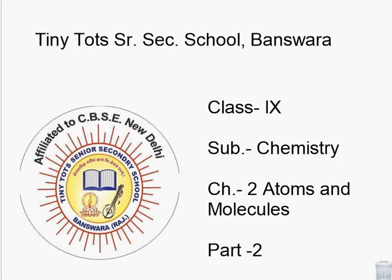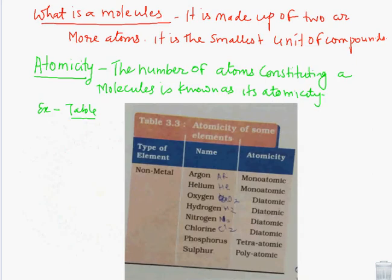Students, atoms exist in the word of two forms, that is molecules and ions. Atoms exist in two forms, molecules and ions. So we see in this video about this. First, what is a molecule? A molecule is made up of two or more atoms, that is the smallest unit of compound.